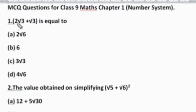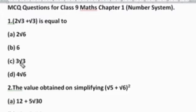Question 1: 2√3 + √3 is equal to — Option A is 2√6, Option B is 6, Option C is 3√3, and Option D is 4√6.